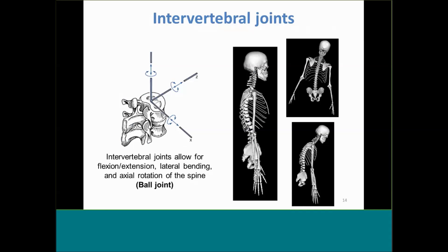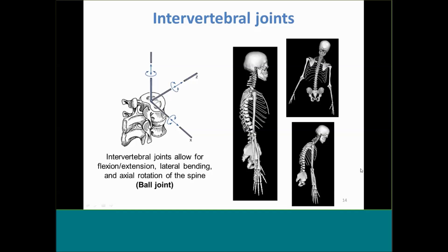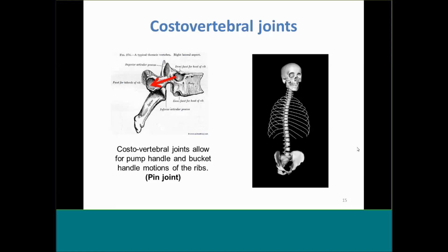The next major step was defining joint anatomy. Intervertebral joints connecting adjacent vertebral bodies were modeled as ball joints to allow realistic flexion-extension, lateral bending, and axial rotation. The rib cage also moves in vivo during ventilation, facilitated by costovertebral joints connecting individual ribs to thoracic vertebral bodies. We modeled these as pin joints, with the joint axis of rotation based on prior cadaver tests measuring stiffness and kinematics. Modeling the joints this way produces the characteristic pump handle and bucket handle motions of the rib cage during ventilation.